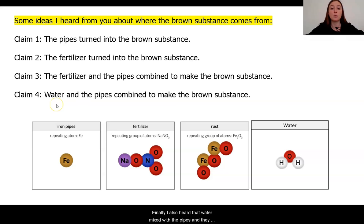Finally, I also heard that water mixed with the pipes and they combined to make this brown substance, this rust. And again, they were noting that there was some oxygen and some iron, so maybe they came together in some way.